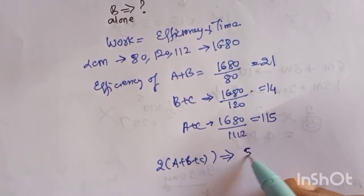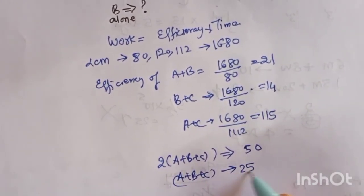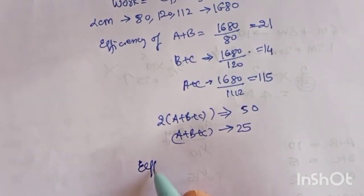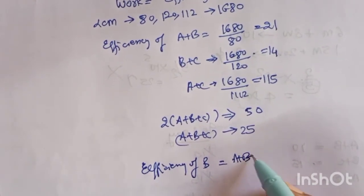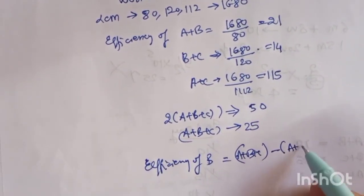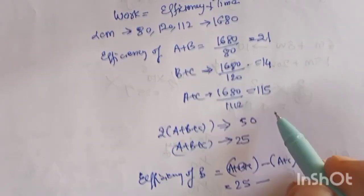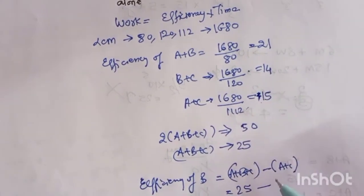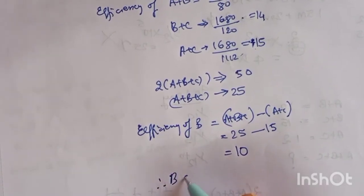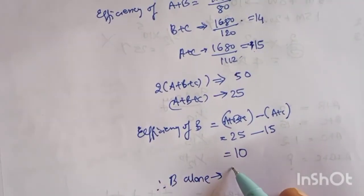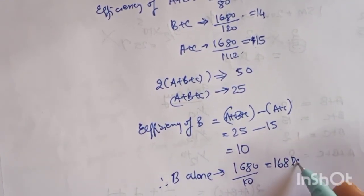Again adding both the sides, the efficiency of twice of A plus B plus C will be add all this, comes out to be 50. So efficiency of A plus B plus C is 25. So now you have to find what is the efficiency of B. So it can be A plus B plus C minus A plus C, so 25 and what is efficiency of A plus C, minus 15, that is 10. So B alone will do the work in 1680 by 10, is equal to 168 days.